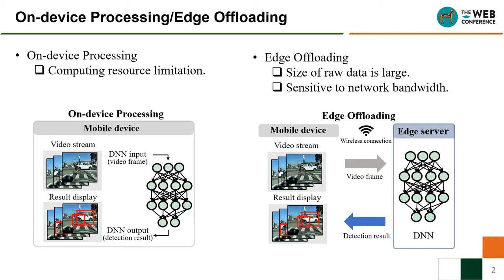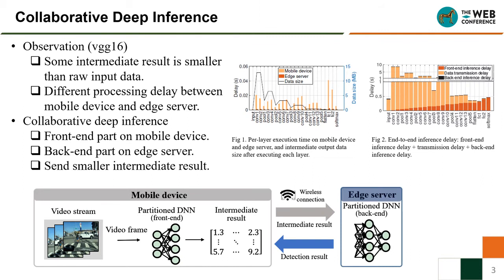However, the size of the raw data may be very large, and the transmission delay is sensitive to the network bandwidth. We run DNN inference and record the execution time on the mobile device and edge server, and the intermediate output data size of each layer.